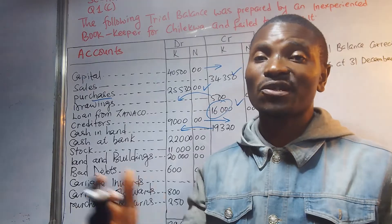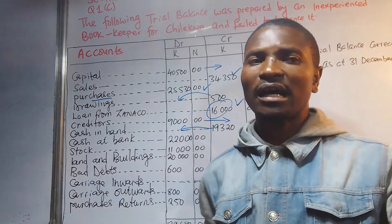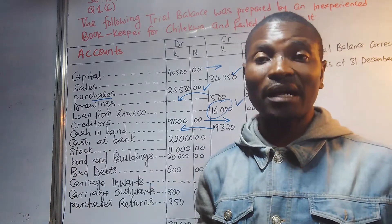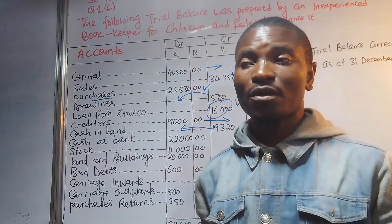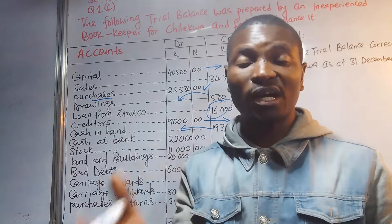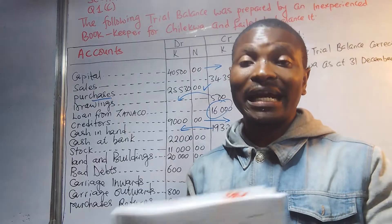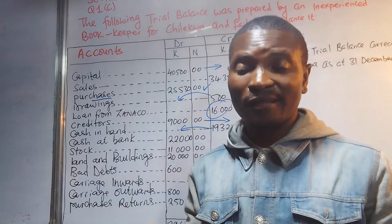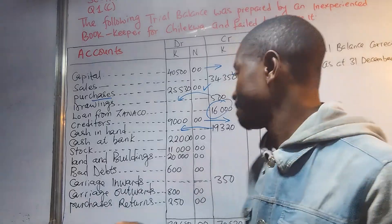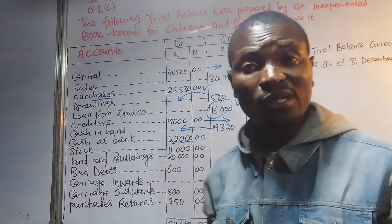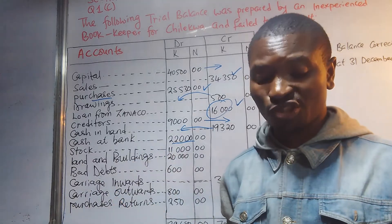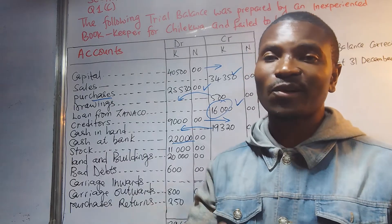Cash at bank is money from the business held in a bank account — for example, 10% of profits saved in the bank. Even though the money is at the bank, it belongs to the company. This should be on the debit side. At 22,000, it is already correctly placed on the debit side, so nothing needs to change.